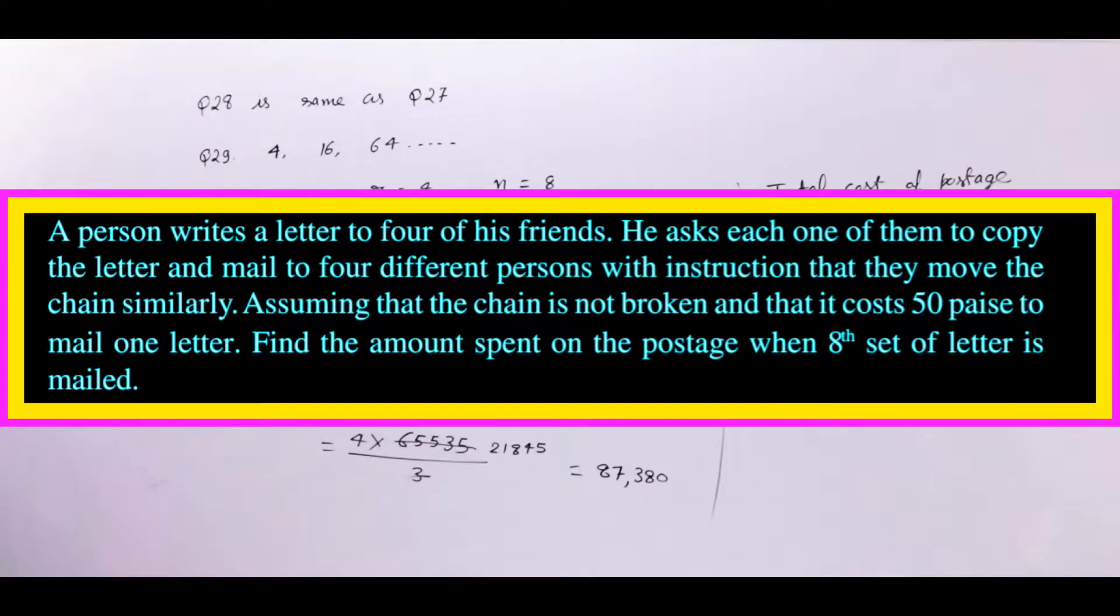Question number 29: A person writes a letter to four of his friends. He asks each one of them to copy the letter and mail to four different persons with instruction that they move the chain similarly. Assuming that chain is not broken and that it costs 50 paise to mail one letter.